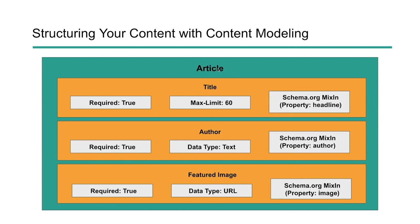So if we looked at an article, you would have the article, then the title of that article — the title is required with a max limit of maybe 60 characters — and we could map that to the headline property. The same thing with the author: it's required and it's a data type of text. We know we need to have text for the author and we can build out a schema mix-in of the author property.